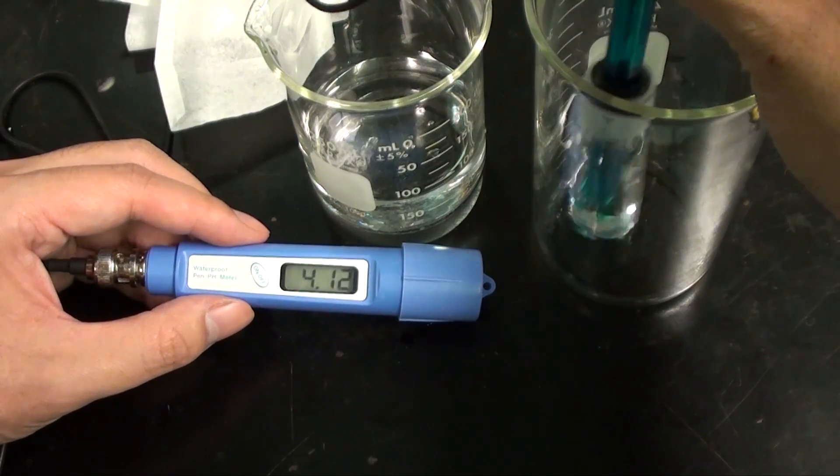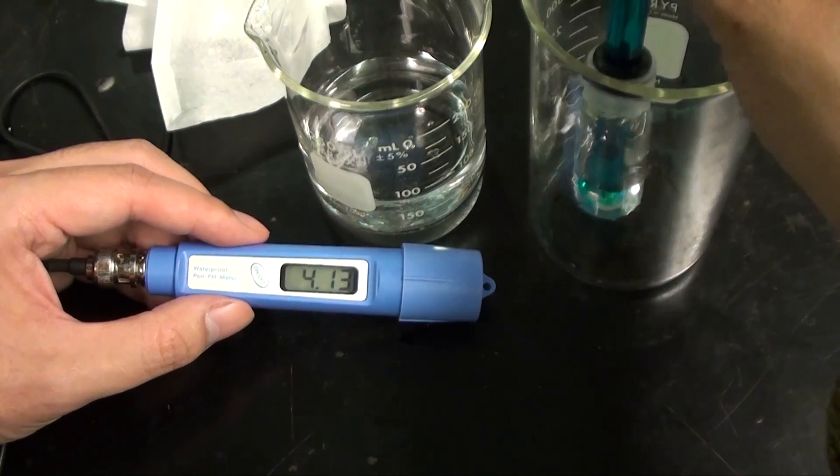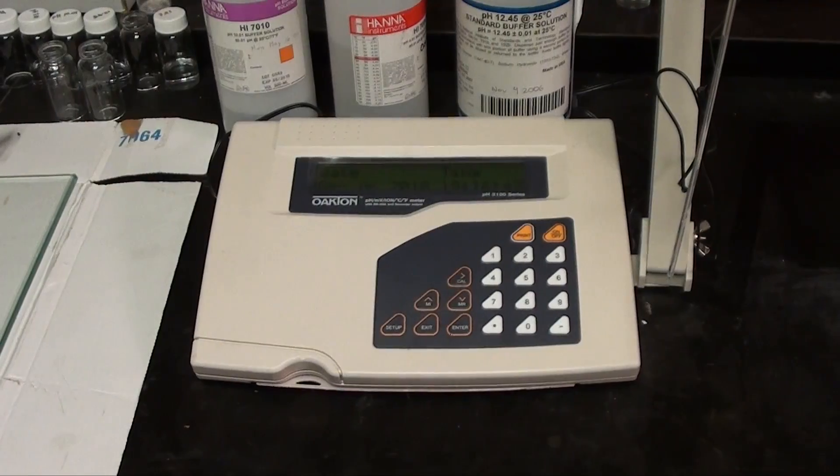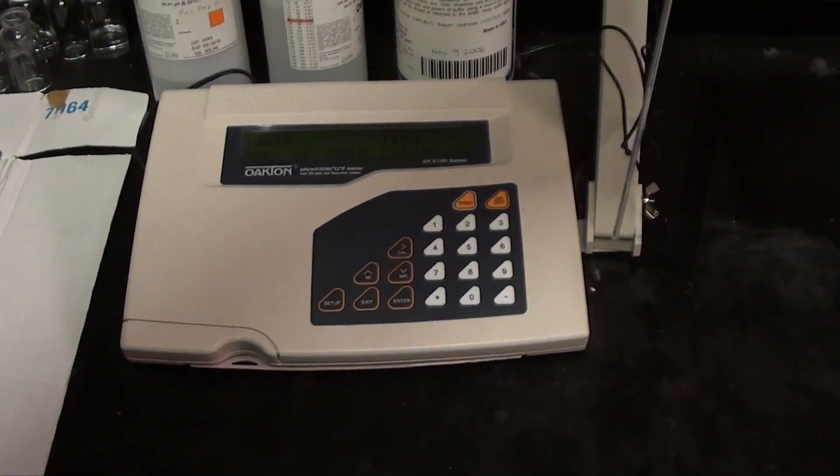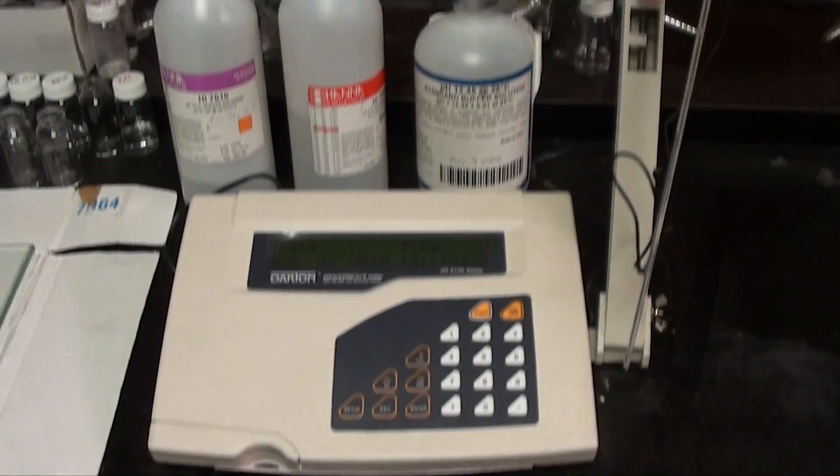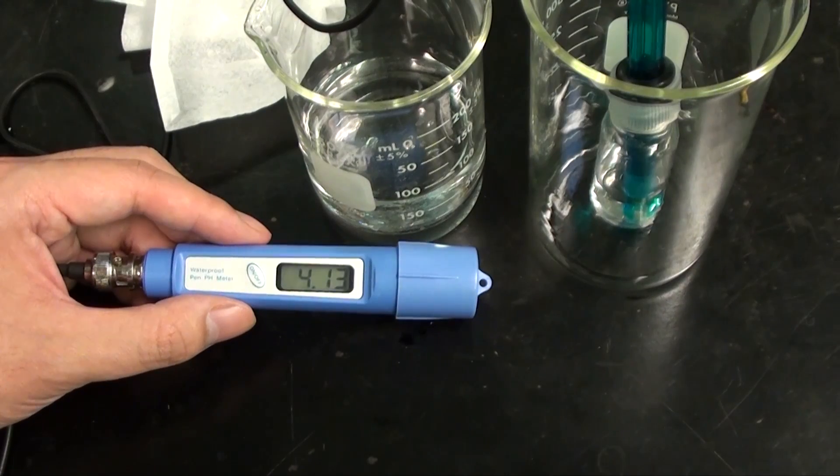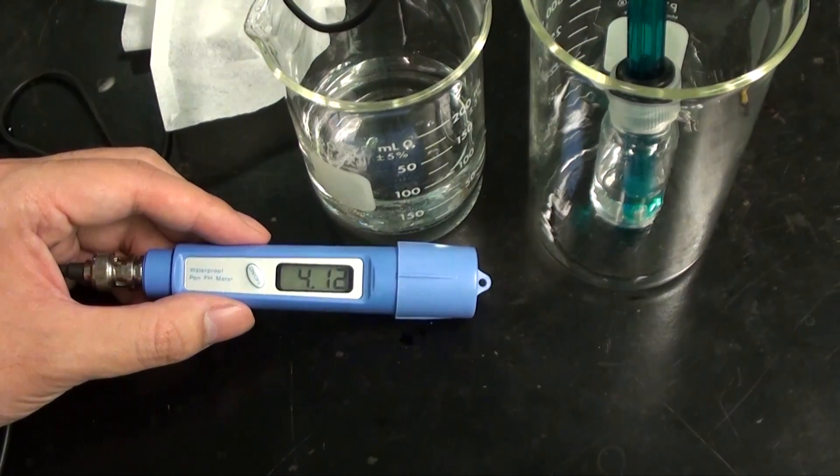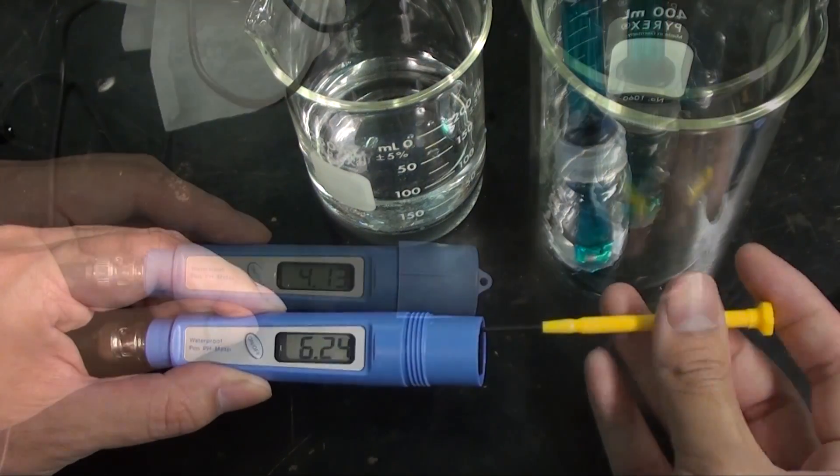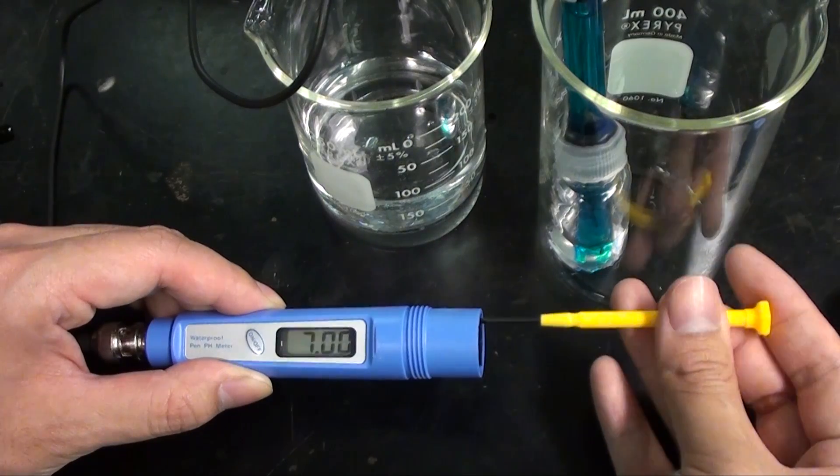The slope of the pH response is not correct. On a more advanced instrument we can calibrate this new point and the onboard computer would automatically readjust the slope. But for this cheaper instrument we don't have that kind of ability. If we readjusted this point we would misadjust the previous point.